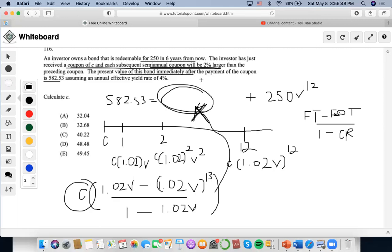So now they're saying that we're assuming an annual effective rate of 4%. Oh, wait, we have to convert that as well. So what we're going to do, we're going to set this up equal to 1 plus J, semi-annual, right?